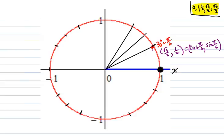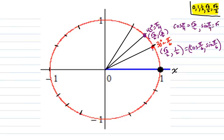This is a 45-degree angle, coterminal to π/4. The coordinates of that point, shown on a previous video, were √2/2, √2/2. So that's the cosine, comma, the sine of the angle π/4. Cosine of π/4 equals √2/2, and sine of π/4 equals √2/2.